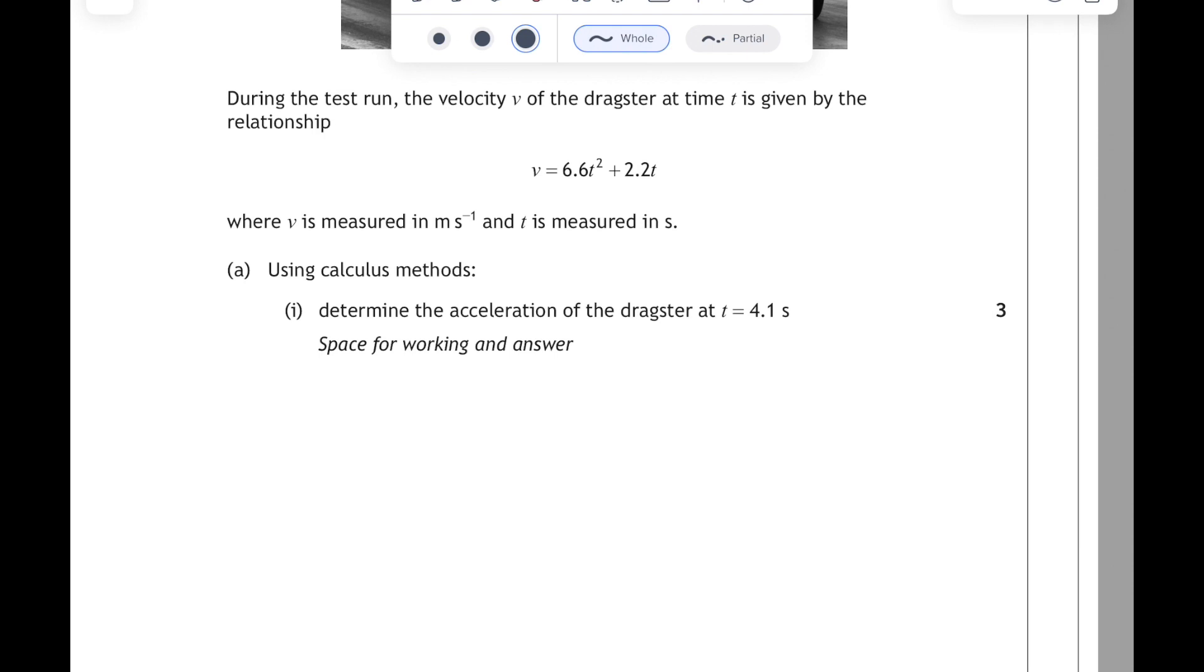We have to determine the acceleration of the dragster at t equal to 4.1 seconds. Well, if it's acceleration we're looking for and we've got a relationship for the velocity, then because acceleration is the rate of change of velocity, is dv by dt, we're going to have to differentiate this relationship.